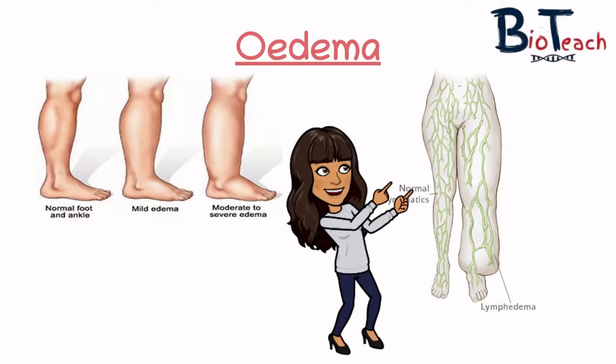Sometimes there's an excess of fluid left in the tissues, which leads to swelling as shown in these diagrams. You may have experienced this on a long plane journey when your ankles swell up if you haven't moved around much. This condition is known as oedema, caused by excess fluid leaking out of the capillaries and not enough being reabsorbed. Exam questions may ask you about the effect of high hydrostatic pressure — remember, higher pressure means more water and substances are pushed out of the capillaries.